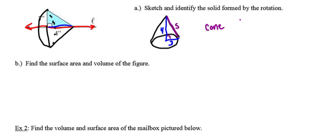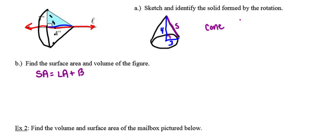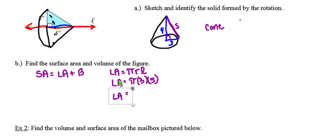In part B, we find the surface area and volume of that cone. Surface area is made up of the lateral area plus the area of the circular base — and for a cone there is only one base. Lateral area is found by doing pi times the radius times the slant height, so pi times 3 times 5 equals 15 pi square units.